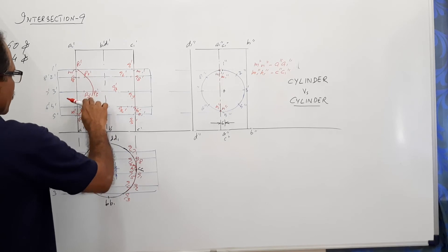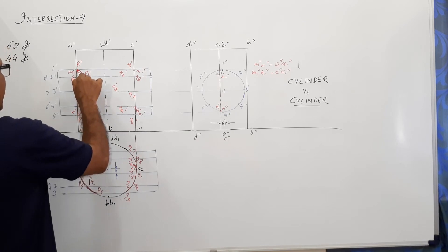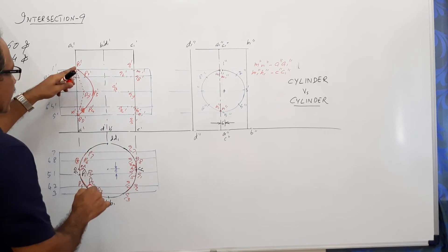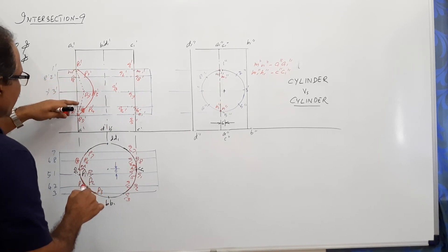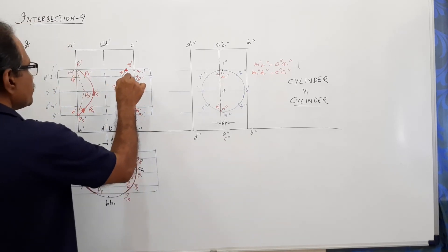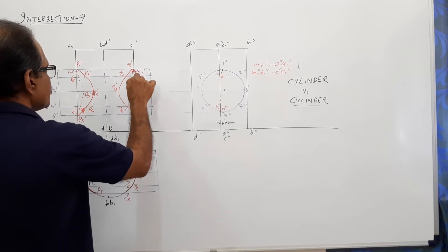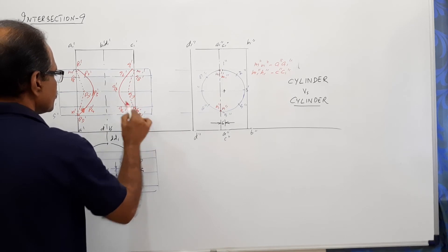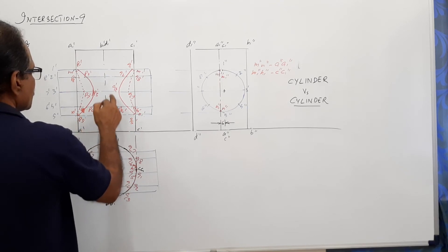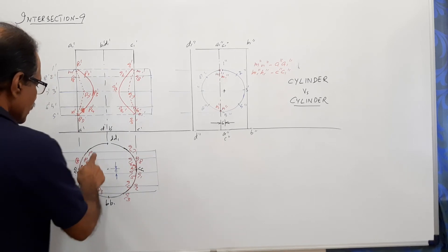Then dotted. M dash P, A dash P, some dash P six dash, N dash, P five dash. These become dotted.